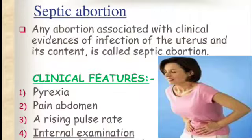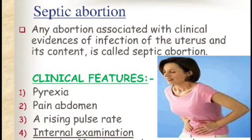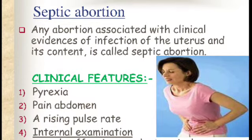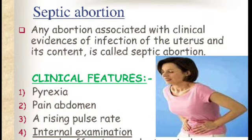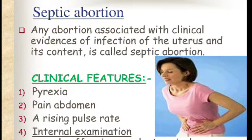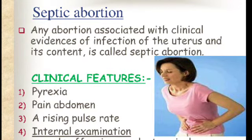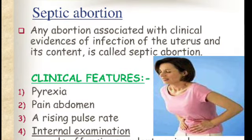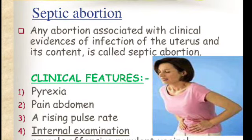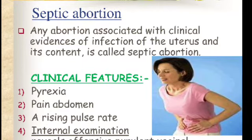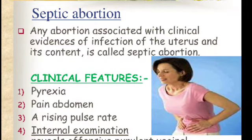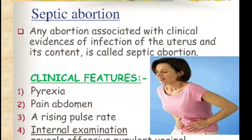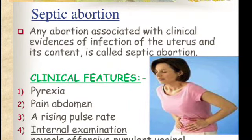The next type is septic abortion. Any abortion associated with clinical evidence of infection of the uterus and its contents is called septic abortion. If any clinical infection occurs in the mother, the resulting abortion is termed septic abortion. Clinical features include pyrexia, which is an important clinical manifestation.